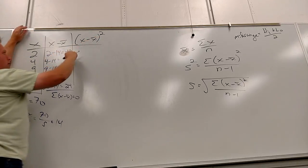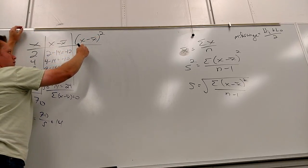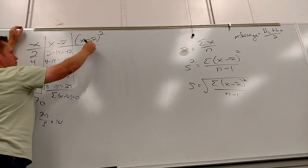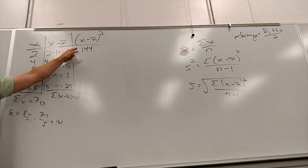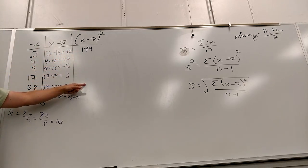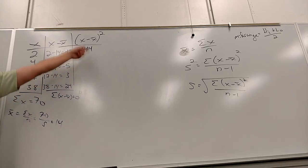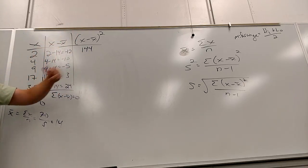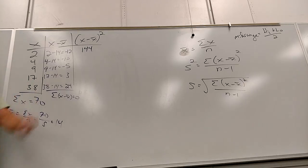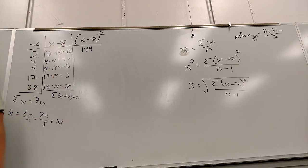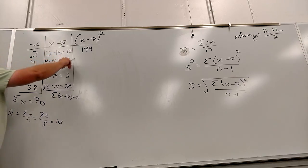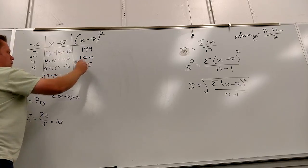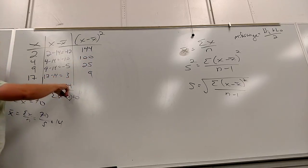So here I square these. Negative 12 squared — and be real careful. All of these numbers have to be positive because you're squaring real numbers. One of the biggest mistakes is people leave the negative and get all kinds of weird answers — complex standard deviations. So: negative 10 squared, negative 5 squared, 3 squared, 24 squared.